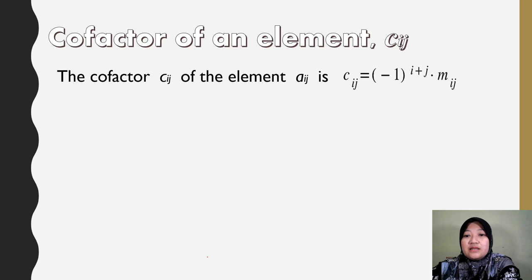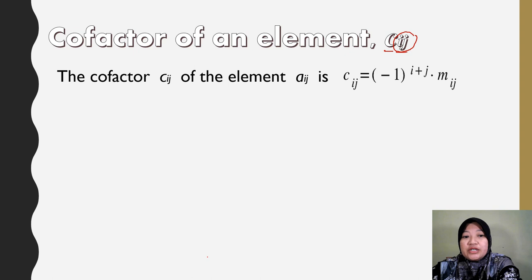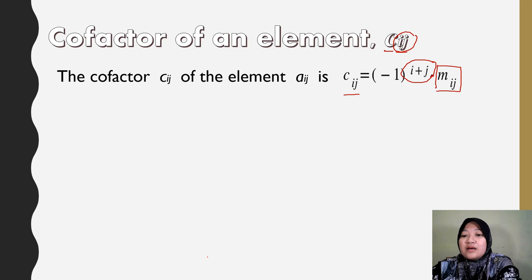Next: cofactor of an element. We use symbol small c_ij, where ij is the position of the element in the matrix. The formula is: C_ij = (-1)^(i+j) times m_ij. What is M? M is the minor. So the relationship between cofactor and minor is: we need the minor first before we can get the cofactor.